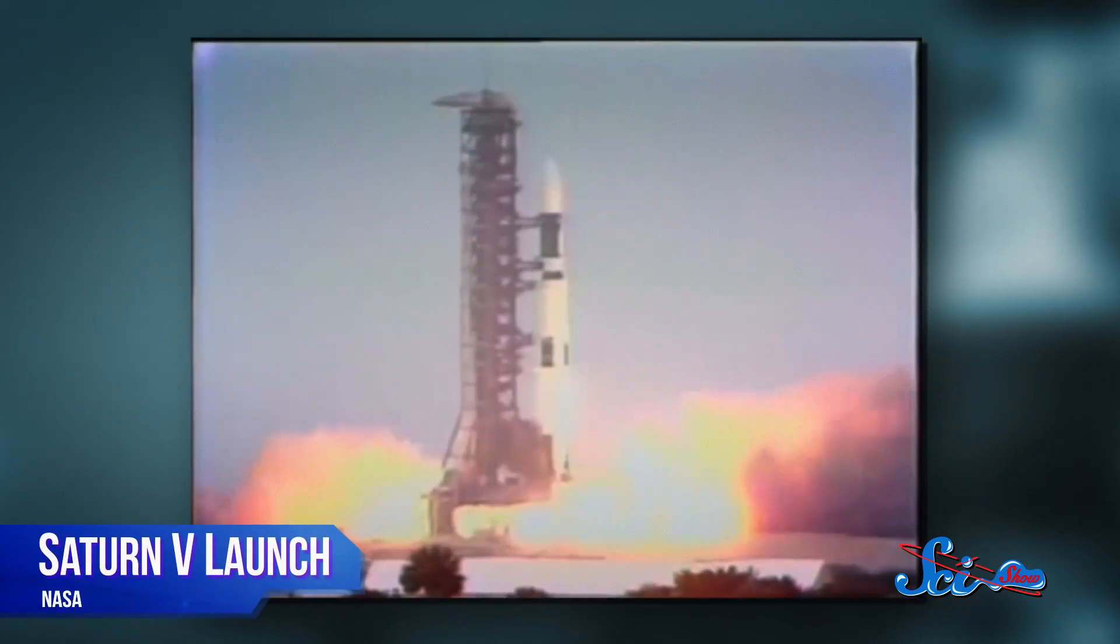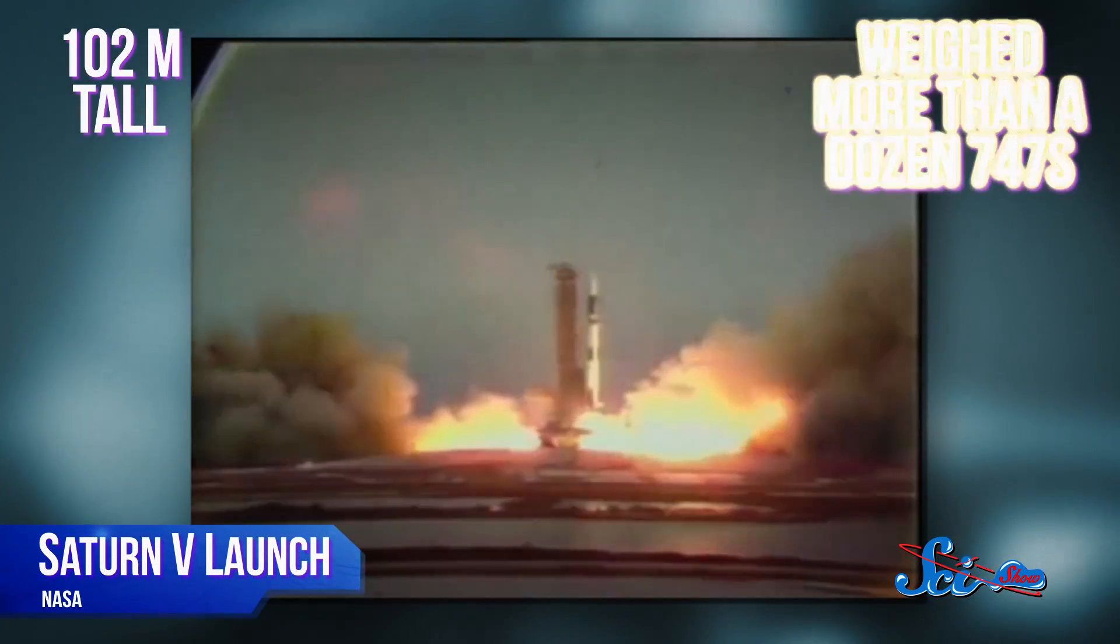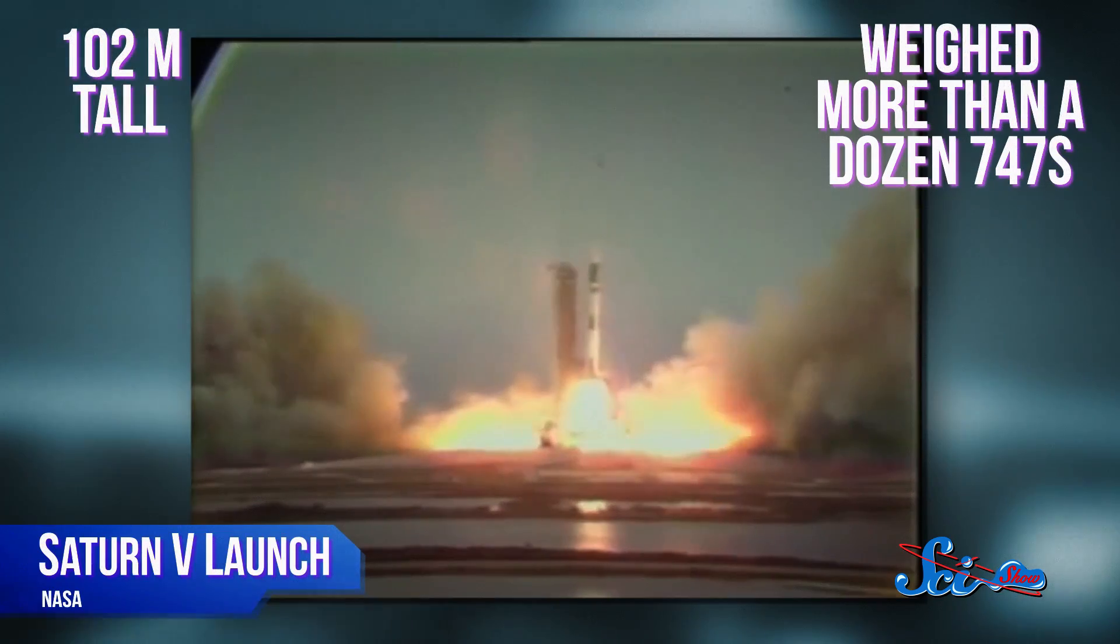While his V-2 rocket was a pretty nifty piece of machinery, the Saturn V was truly revolutionary. 102 meters tall, and at liftoff, weighed more than a dozen 747s. And as the world witnessed during the Apollo missions, the Saturn V was not only incredibly powerful, it divided the work of spaceflight into an elegant three-stage system.